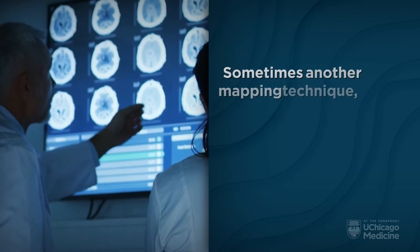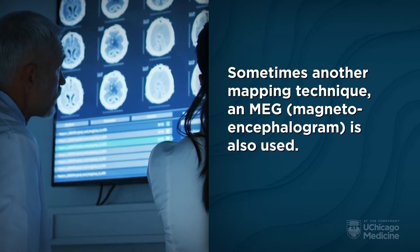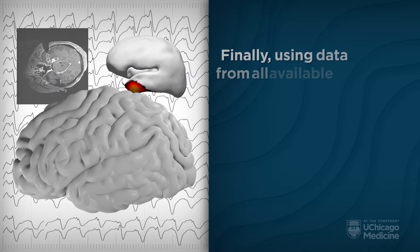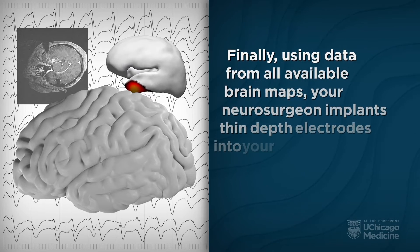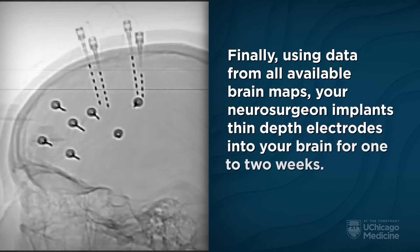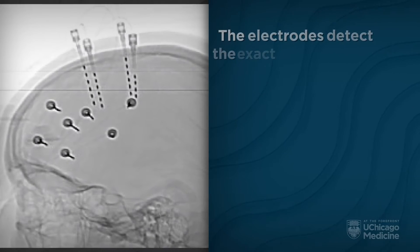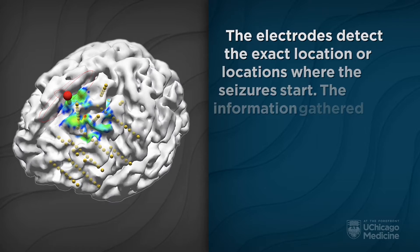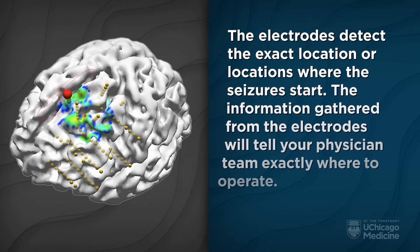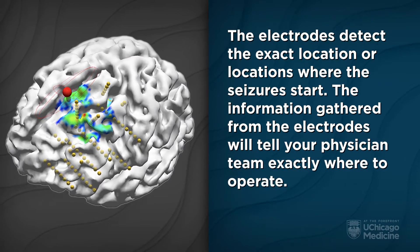Sometimes another mapping technique, an MEG — magnetoencephalogram — is also used. Finally, using data from all available brain maps, your neurosurgeon implants thin depth electrodes into your brain for one to two weeks. The electrodes detect the exact location or locations where the seizures start, and the information gathered from the electrodes will tell your physician team exactly where to operate.